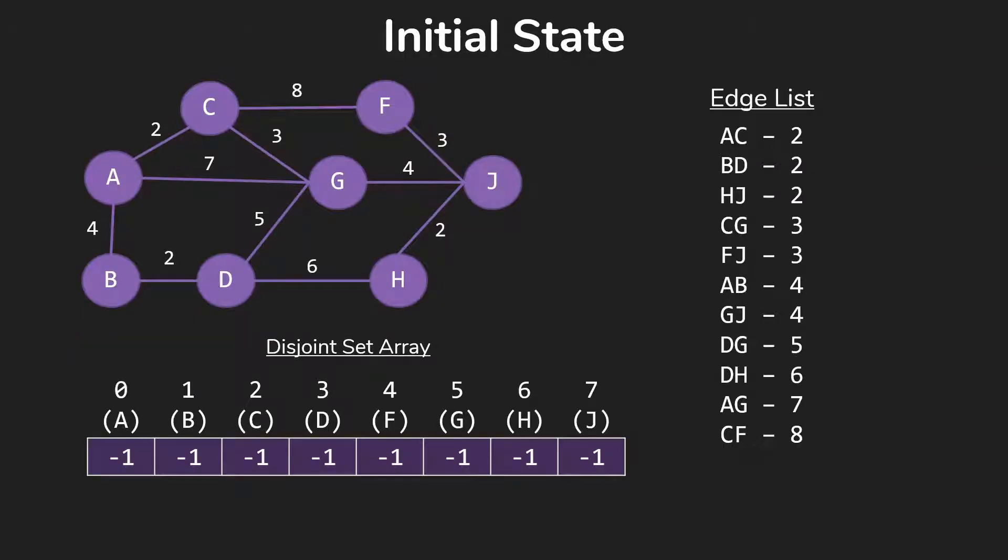Here's an initial state. We've taken all of the edges in our tree and sorted them by weight, and we've set up a disjoint set array with minus one for each of the items to indicate that each of them is in their own tree. Each of them is the root of the tree representing the set.